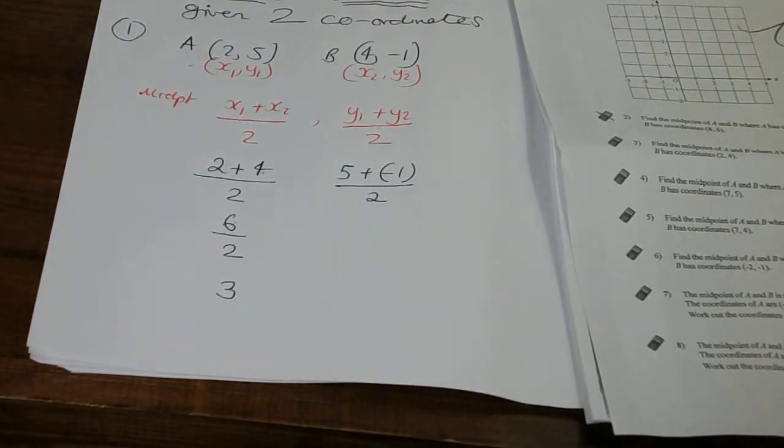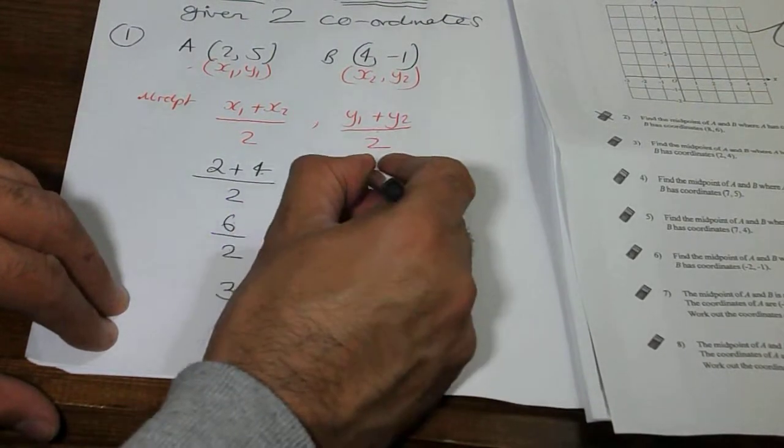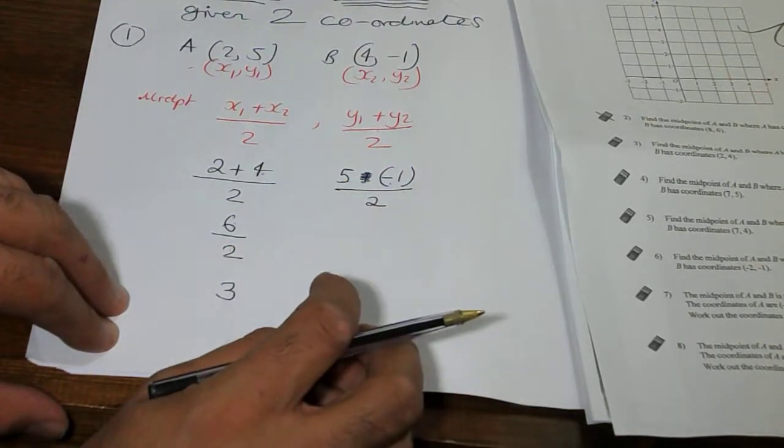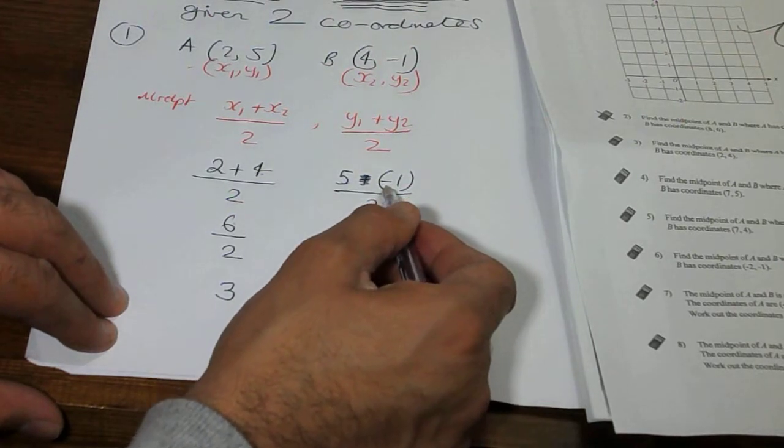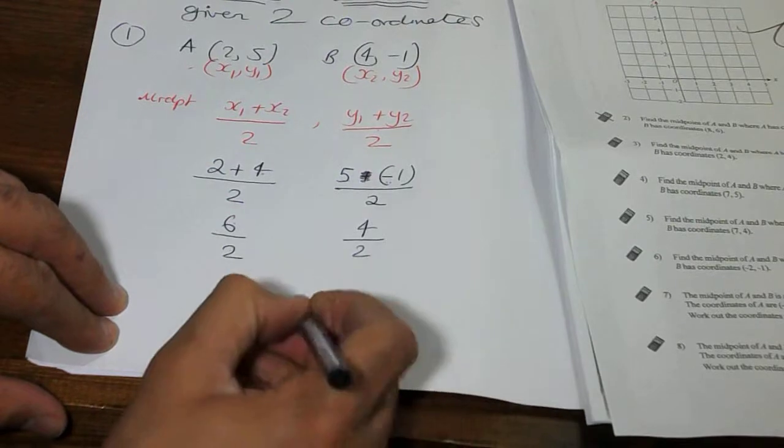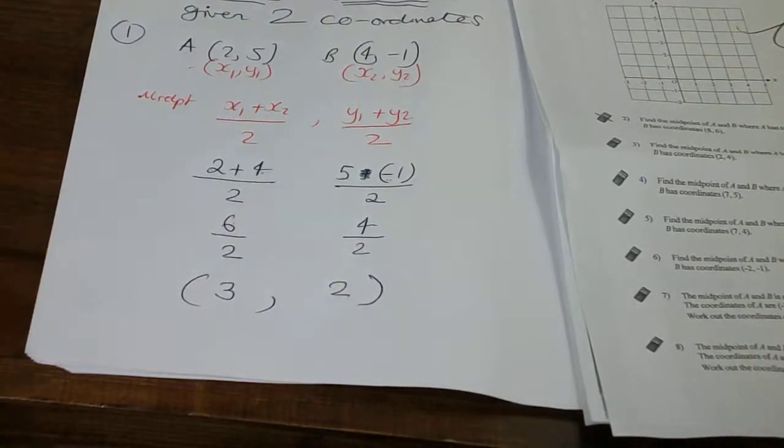Okay, a lot of students get confused when they see 5 add minus 1. 5 add minus 1 has the same effect as 5 minus 1. That's the effect of those two signs together. So 5 take away 1 will give us a total of 4. And we divide that by 2. And 4 divided by 2 is 2. And here is our midpoint.